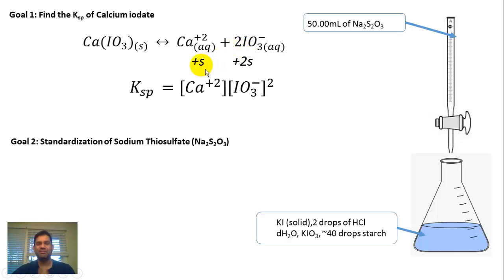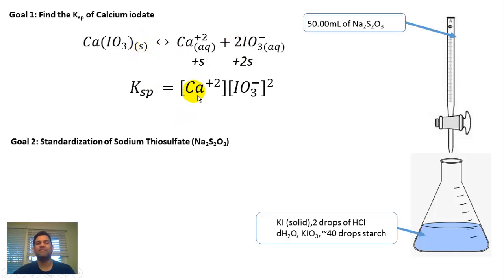When we do our ICE table, this will be plus S. The S stands for solubility. And this will be plus 2S because there are two moles of this. Remember, solids never go into the equilibrium constant. So the Ksp is the calcium ion concentration times the IO3- ion concentration squared.